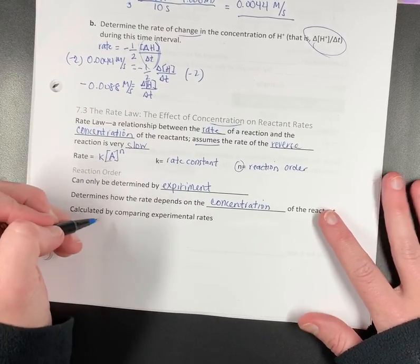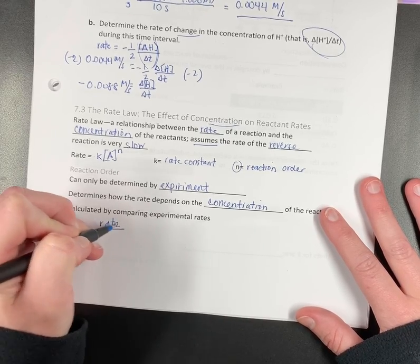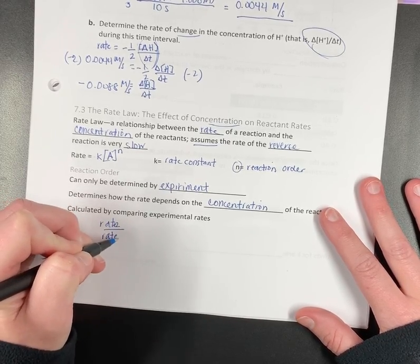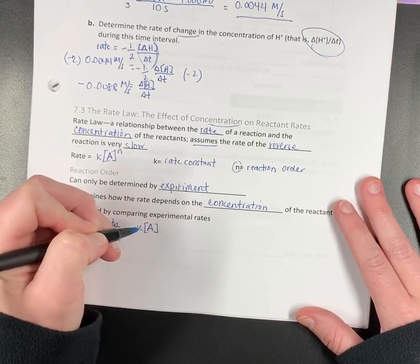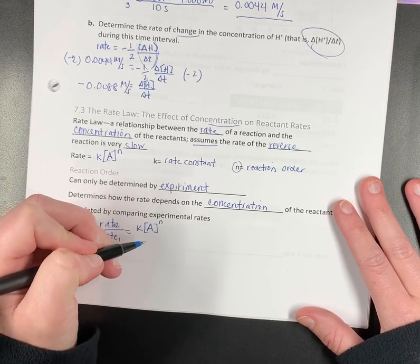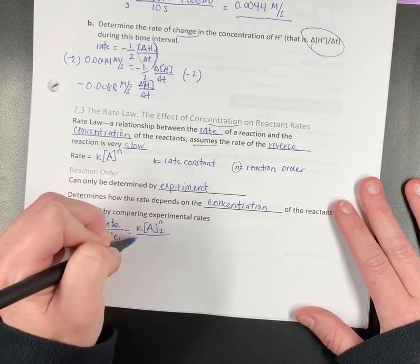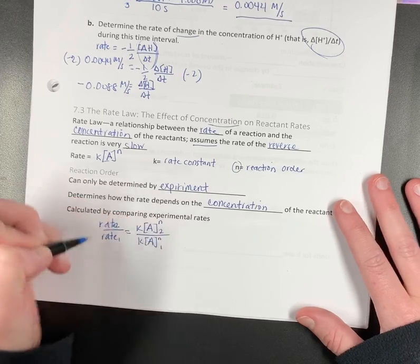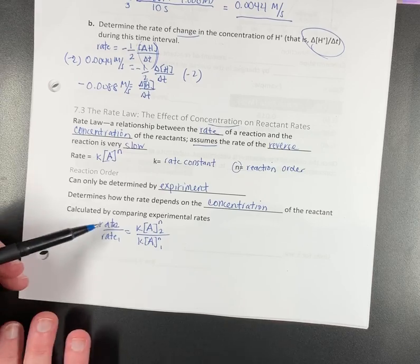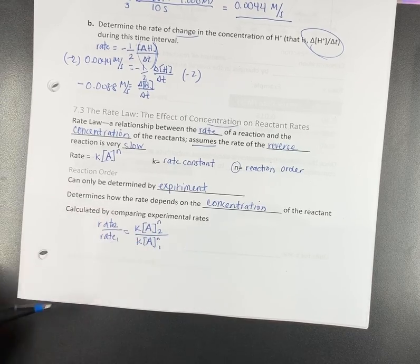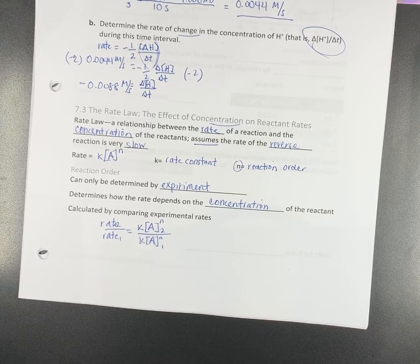So the way you calculate it is you do rate 2 over rate 1 equals rate constant, concentration of A to the reaction order. This is concentration of A in the second one. K, concentration of A to the n for the first one. So it's just a proportion. You're going to know the rate, the rate, the concentration, the concentration. K will cancel out, and then you can use a log to solve for reaction order.